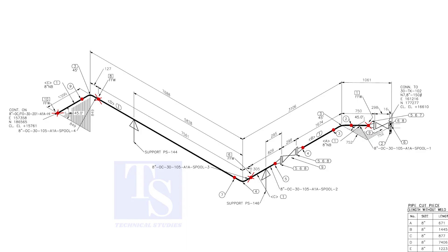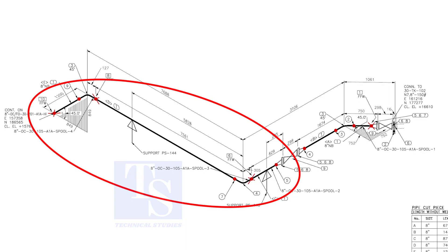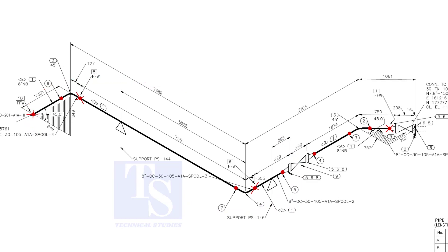We are going to fabricate this part of the piping. In this part of the drawing, there are three spools.